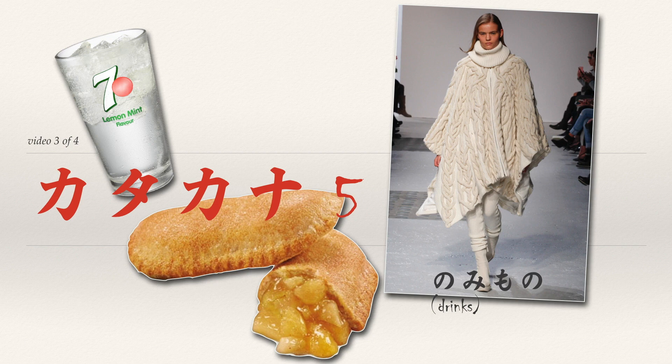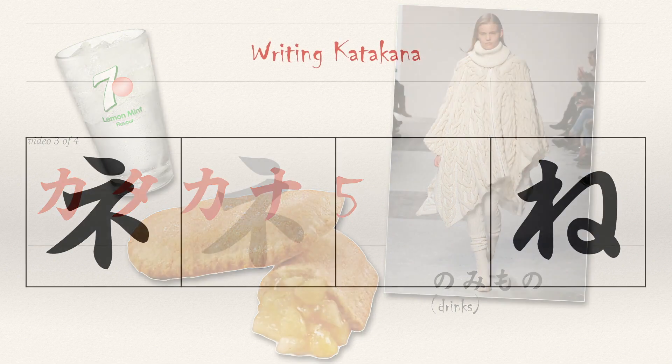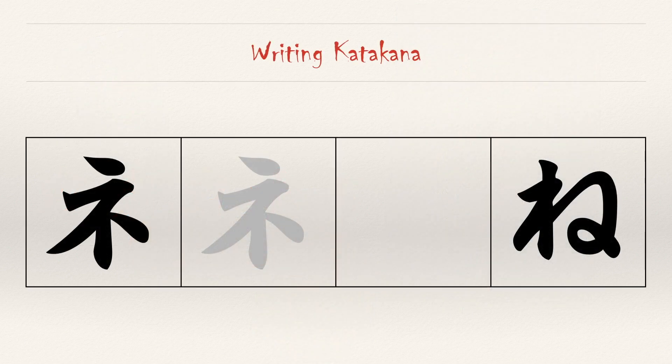There are more syllables, but no more characters. So much for easy — Ne is four strokes and one of the most difficult katakana characters.